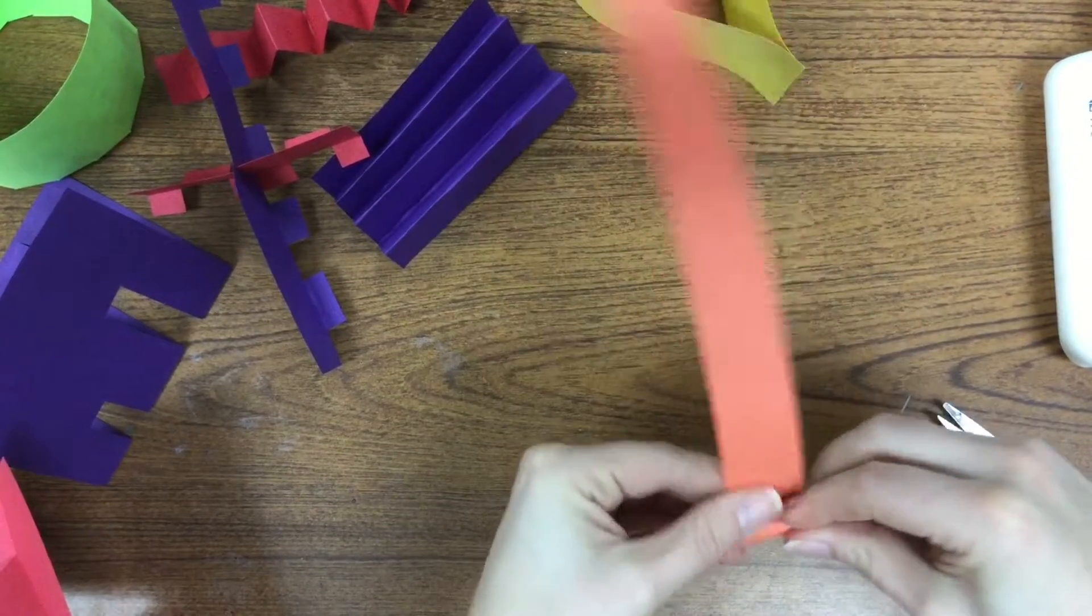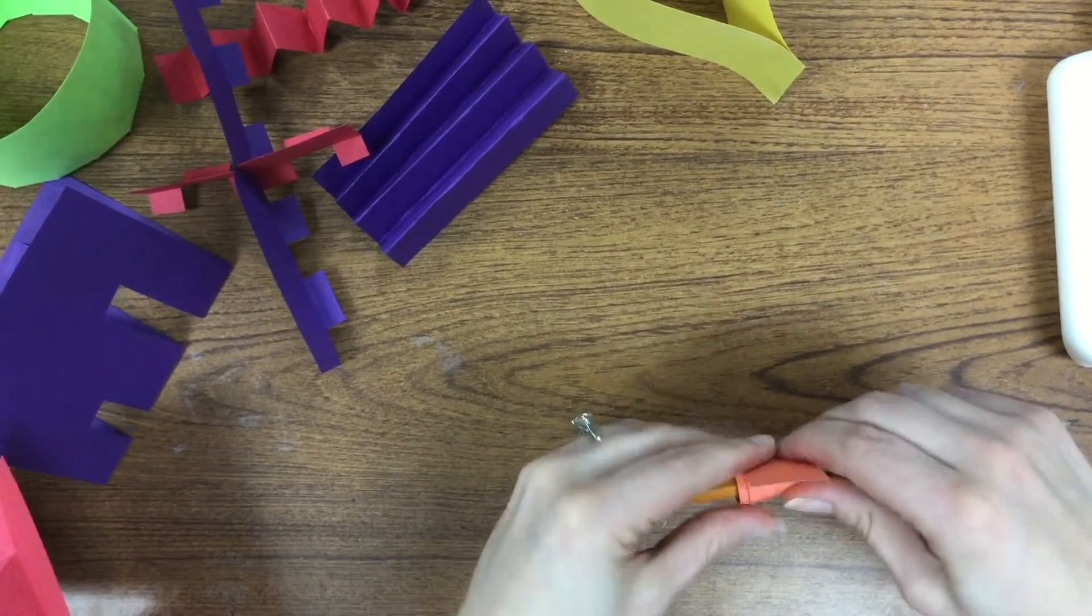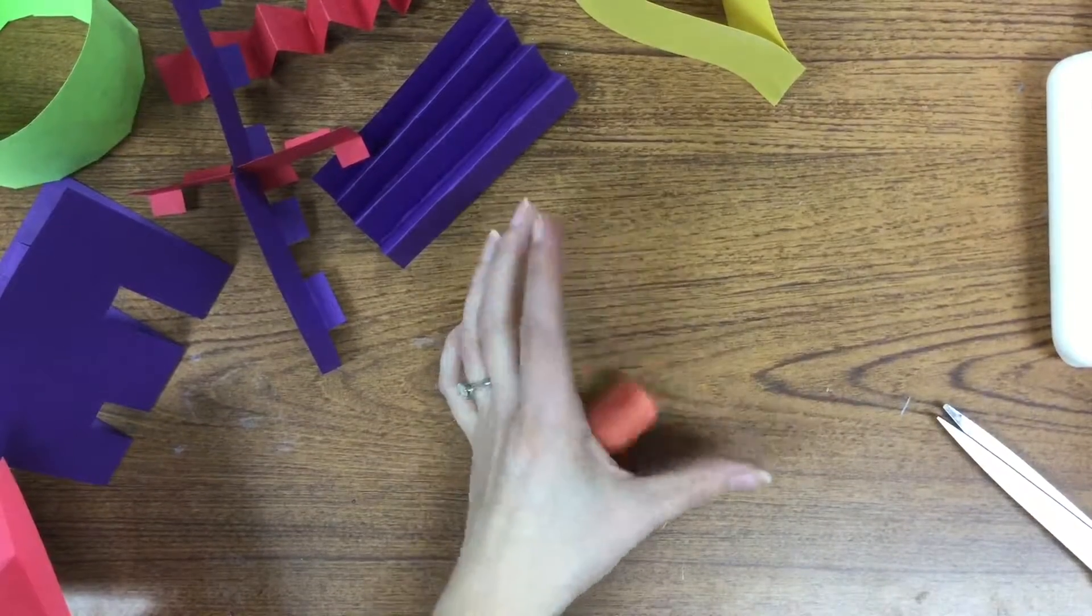Roll your strip of paper around your round object until you get to the very end. Make sure it's really, really tight because you can always change it when you're done. Slip your round object out and let go.